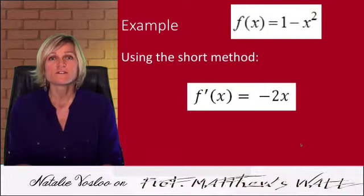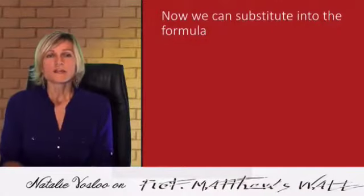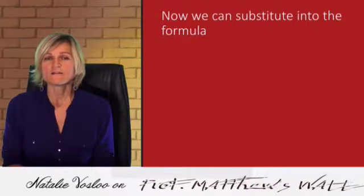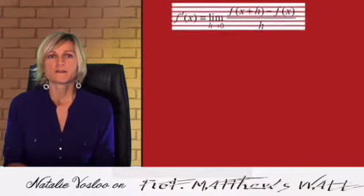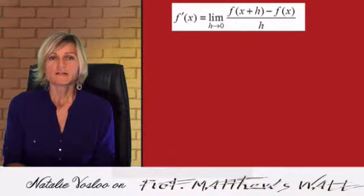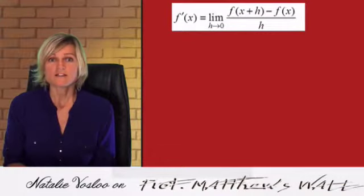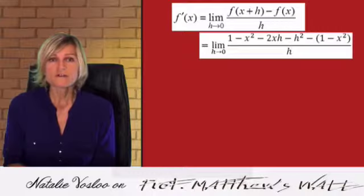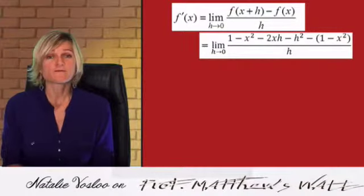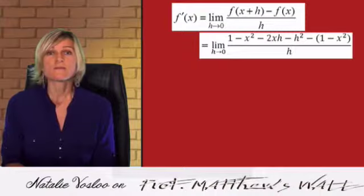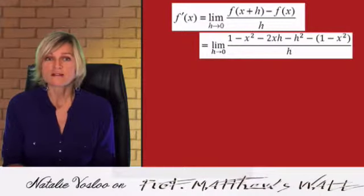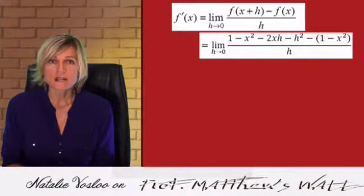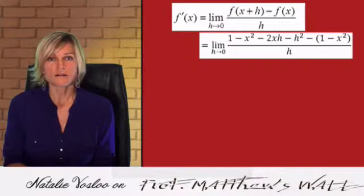But from first principles, we have to go through the whole rigmarole of using the formula. Now we can use f of x plus h and f of x to substitute into our formula. We start off with the formula, as we had before, and now we have an expression for f of x plus h, and we have an expression for f of x. Remember to always include the limit as h tends to 0. A lot of people forget that. And another thing that people do is that they forget to write the brackets. If you forget to write the brackets, your signs are all going to be incorrect.